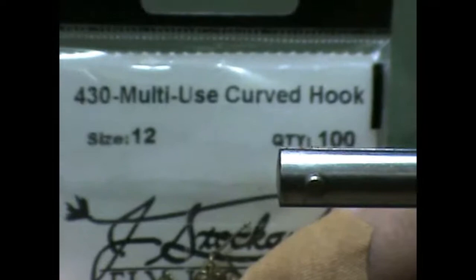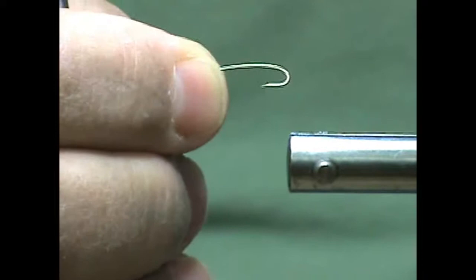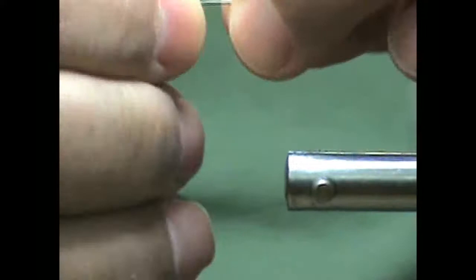The hook that I'm using for this fly is a 430 multi-use curved hook in size 12 and it's a J Stockard hook. It's a dry hook, very light, but as you can see when I hold this up the gap is very narrow and on this fly I want to make the gap a little wider.